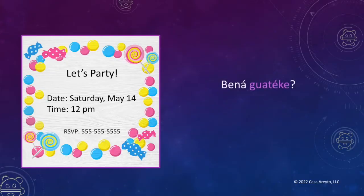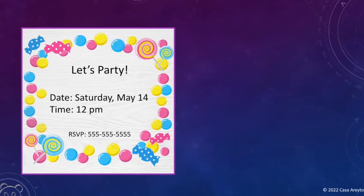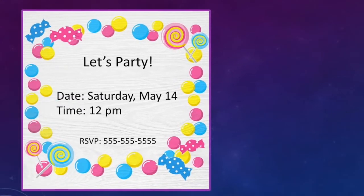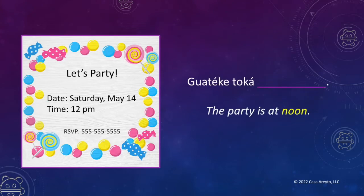The question is: Bena guayaleta — when is the party? Oh, guateque — that's a new word you're learning today. That'll come in handy. So let's take a look at the picture. I see the date, and there it is — I see the time. It says 12 p.m. We can say 12 p.m., but why don't we just use the word for noon that we learned today? Let's take a look at the answer — guayaleta. Do you remember what noon is? That's right — guayaleta. So let's read the whole sentence together. The party is at noon.